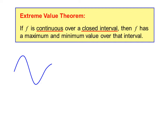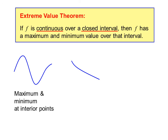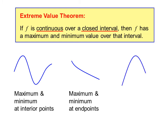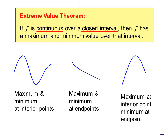Looking at some examples — in all three we assume closed intervals. In the first example, the maximum occurs at an interior point and the minimum occurs at an interior point. In the next example, both the maximum and minimum occur at end points. And in the third example, the maximum occurs at an interior point and the minimum at an end point.